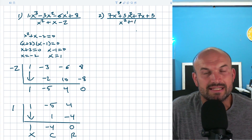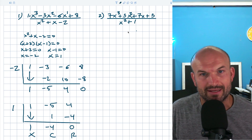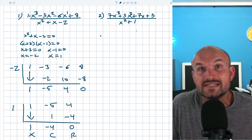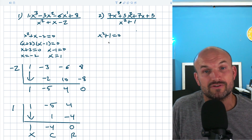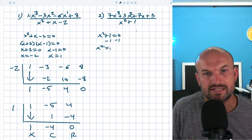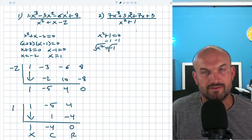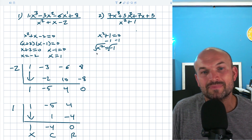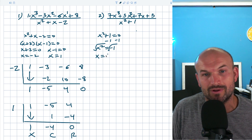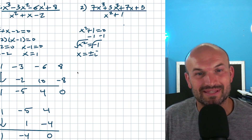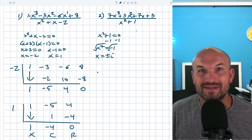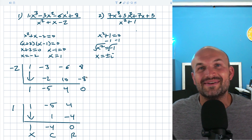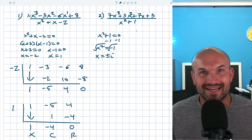Looking at the next example, the denominator again has two solutions because it's quadratic. I'll set it equal to zero and solve. This one is not factorable over the real numbers, so I'll use inverse operations. Subtracting one from both sides gives X squared equals negative one. I can't take the square root of a negative number over the reals, but in the complex number system I can rewrite the square root of negative one as i. So X equals plus or minus i. Yes, we're going to do synthetic division with complex numbers. If you'd prefer long division, that's what I recommend to my students, but let's continue.